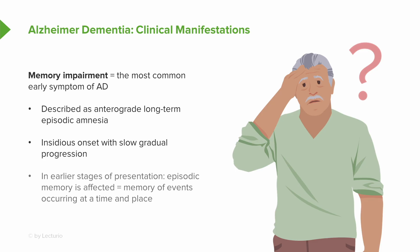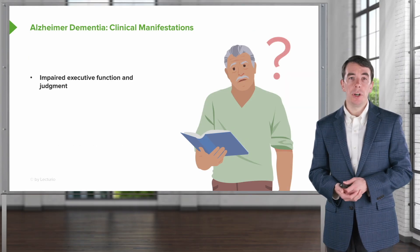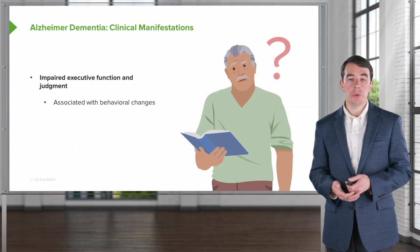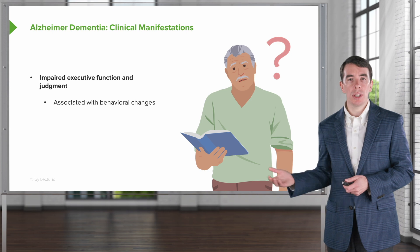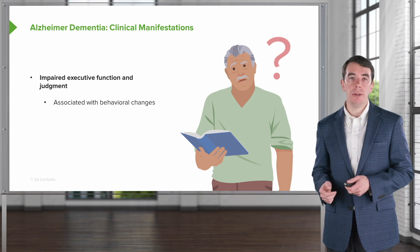In the earliest stages of presentation, episodic memory is affected — that's the memory of events occurring at a time or a place, things that we've done recently. We can also see impairment in executive function and judgment. There can be associated behavioral changes, and this is more common in advanced stages of the disease.